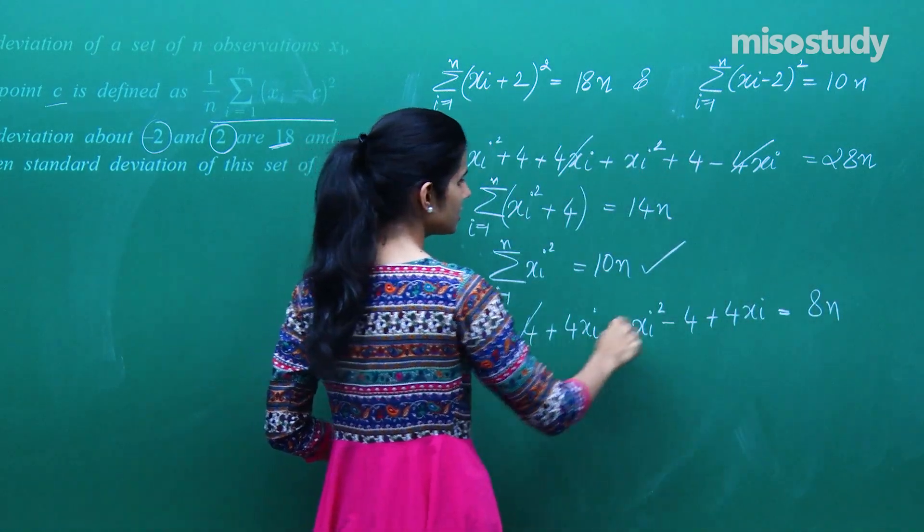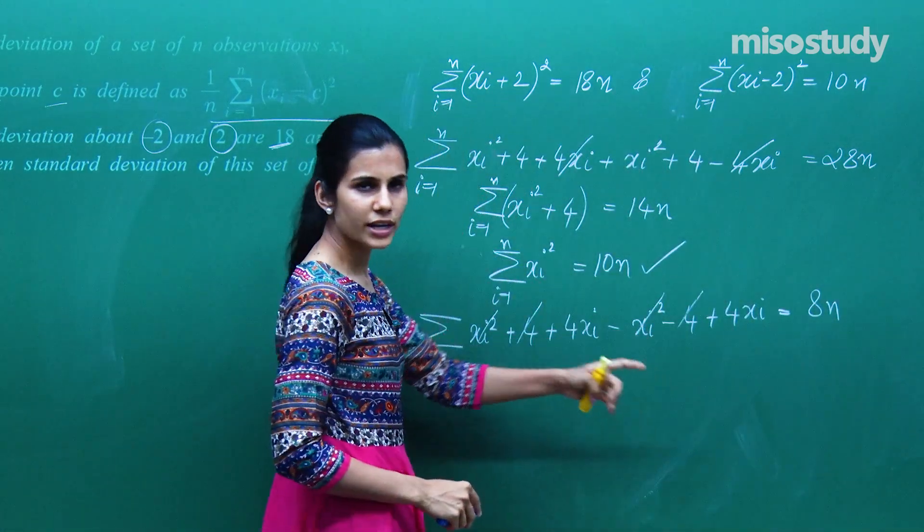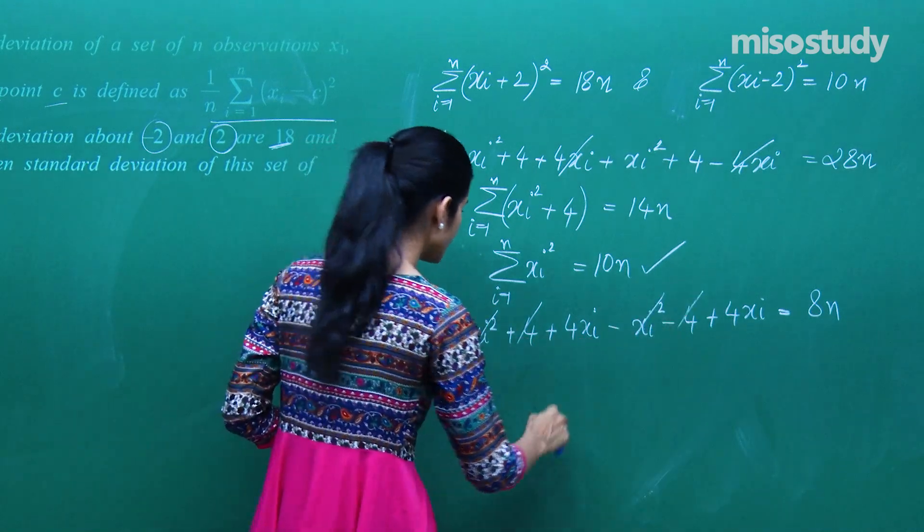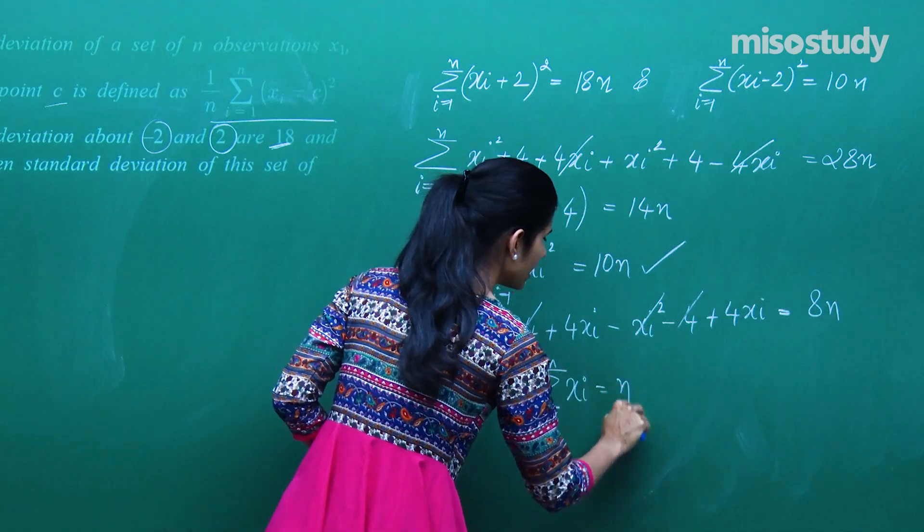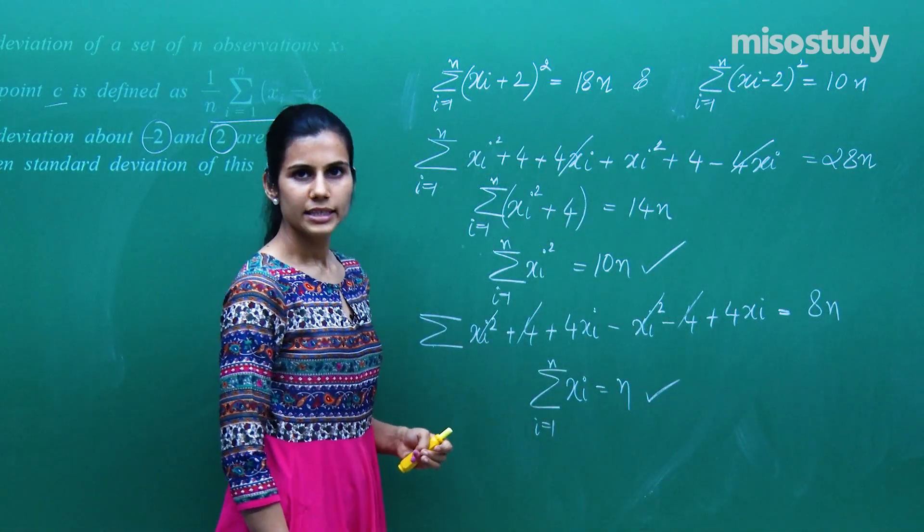This will be 18 minus 10 which is 8. So this cancels, this cancels. 4xi plus 4xi is 8xi. 8 goes there. So you are just left with summation xi, i going from 1 to n gives you n.